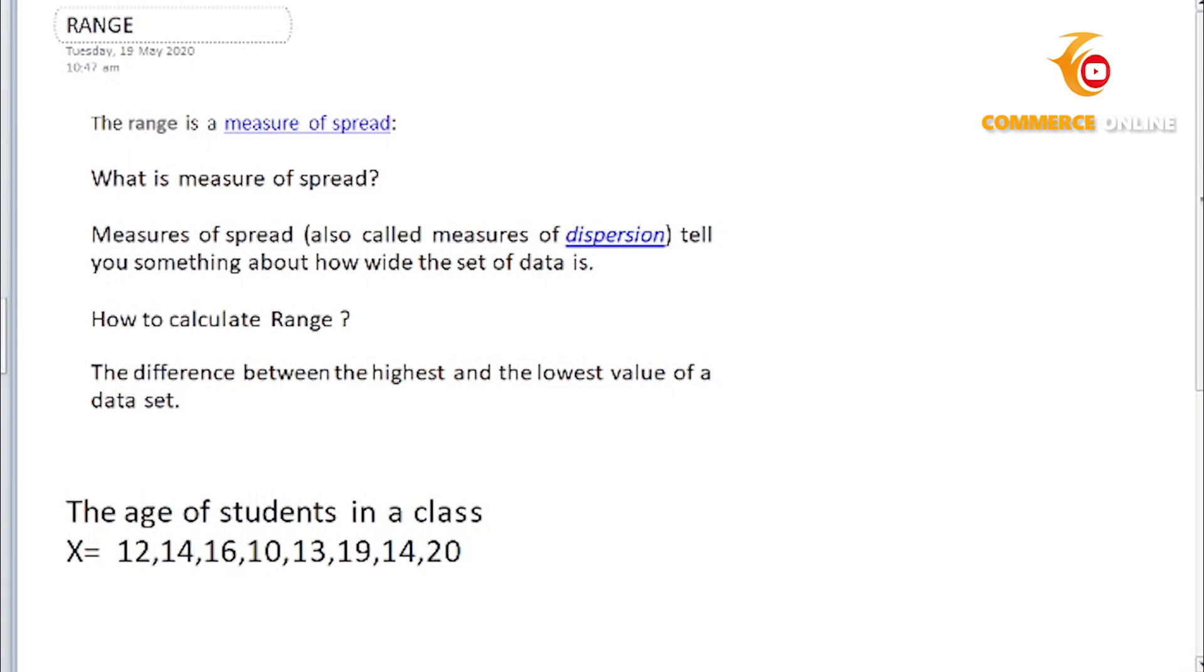Range tells us how much data has been spread. When we calculate the frequency distribution table, we have to calculate the range. To calculate the range, we have to take the highest value and the lowest value and subtract them to get the range.